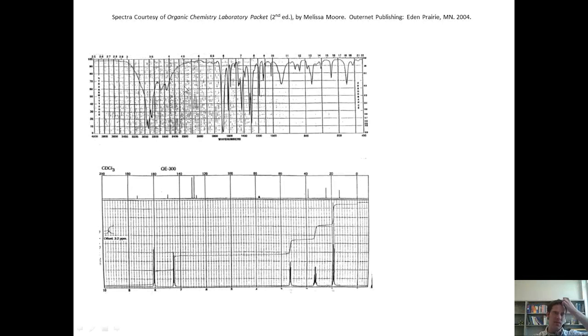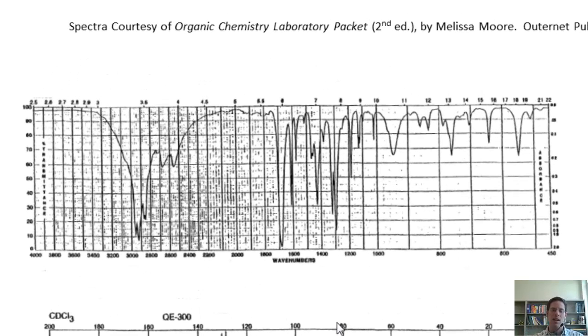Let's do one more example. Let's say that I've got this IR and these NMR spectra. First thing I do is I look at my IR and try to figure out, is there a carbonyl? Is there one? Yes, there is. It's right here.